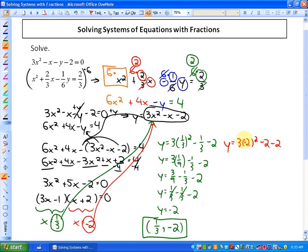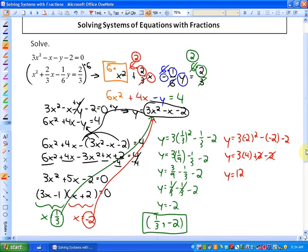So if I substitute -2, it should be 3(-2)² - (-2) - 2, which would be y = 3(4) + 2 - 2. These cancel out, and that leaves us with y = 12. So our other solution is when x = -2, y = 12, and those are our two solutions.